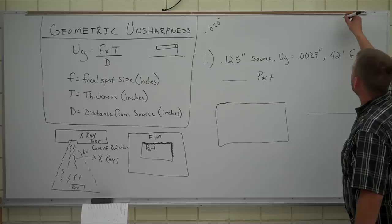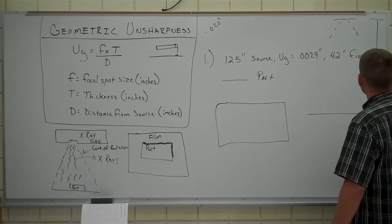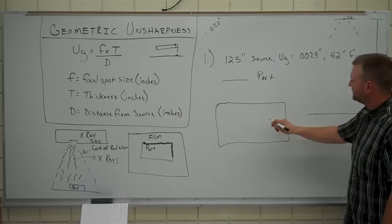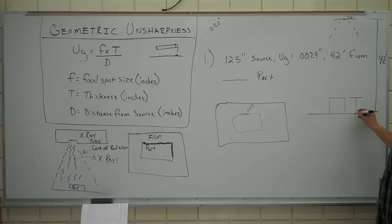Here's our film. Let's draw a side view as well. We're going to go way up here and say here's our x-ray tube. There's our cone. This distance here is 42 inches. Kind of hard to see. The size of this source up here is .125 inches. We already have a .0029 UG, so fuzziness around there. Park that part right on top of the film. It looks like that. We're going to figure this thickness right here. So let's just do that.